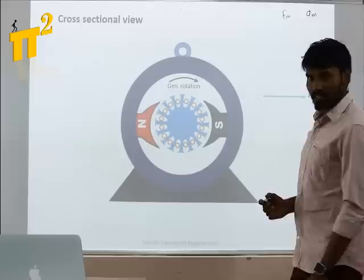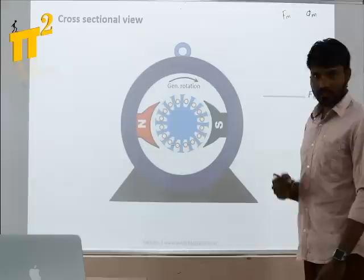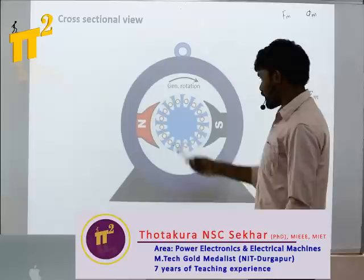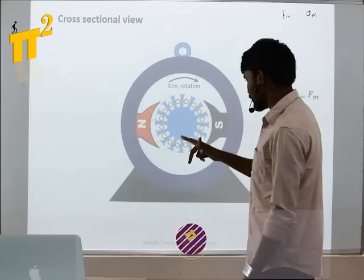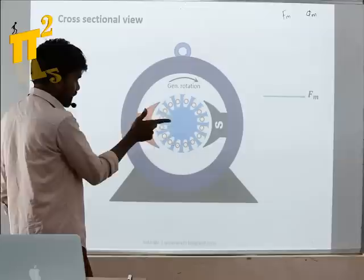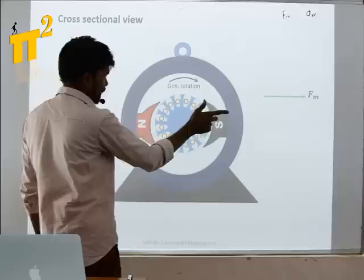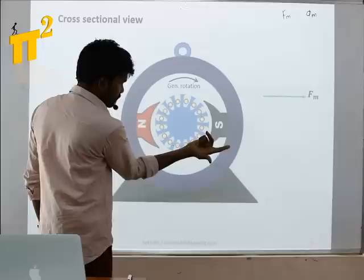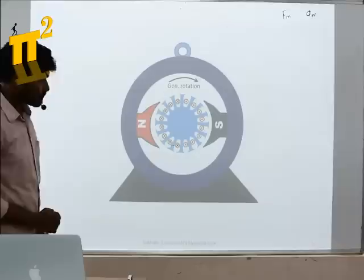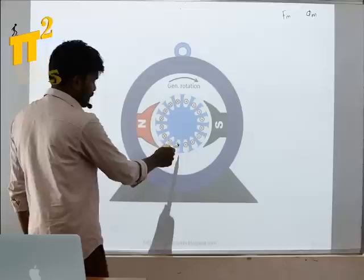If we consider this machine as a generator, we should give rotation and it gives electrical output. We are rotating the generator in the clockwise direction. Applying Fleming's right-hand rule to find the current direction in these conductors — the flux direction is given, force on this conductor is upwards, so current is going inwards here. On the other conductor, force is downwards, so current is dot on one side and cross on the other.